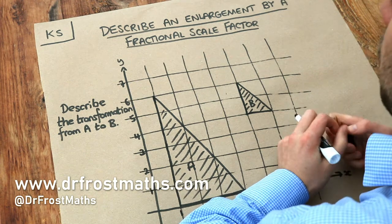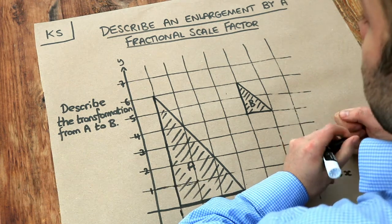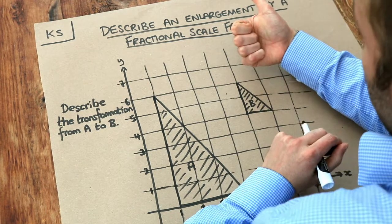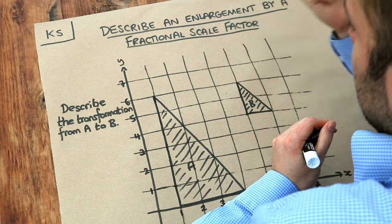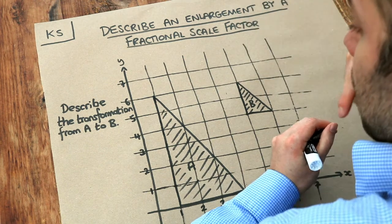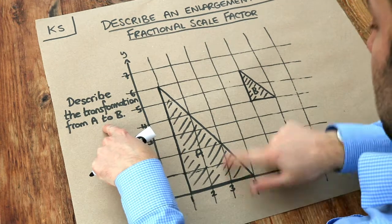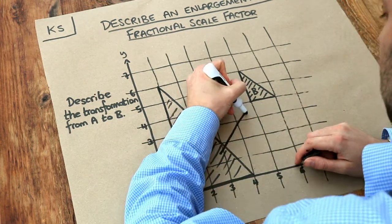In the previous video we saw how we could describe an enlargement. We needed to say it was an enlargement rather than say a rotation or translation. We need to give the sense of enlargement and we need to give the scale factor. So we're going from shape A to shape B.